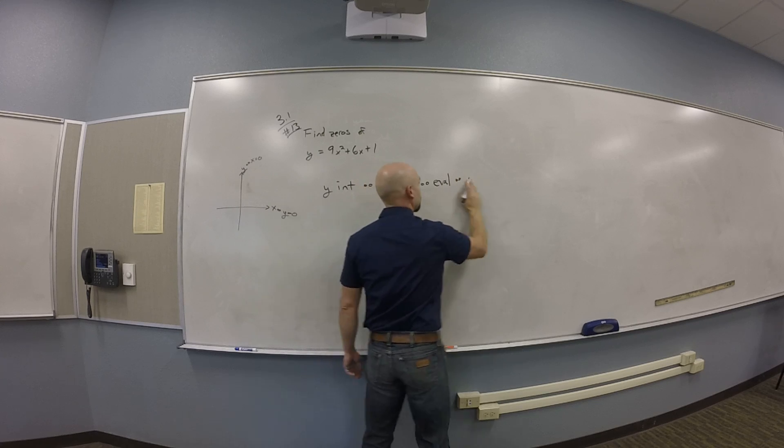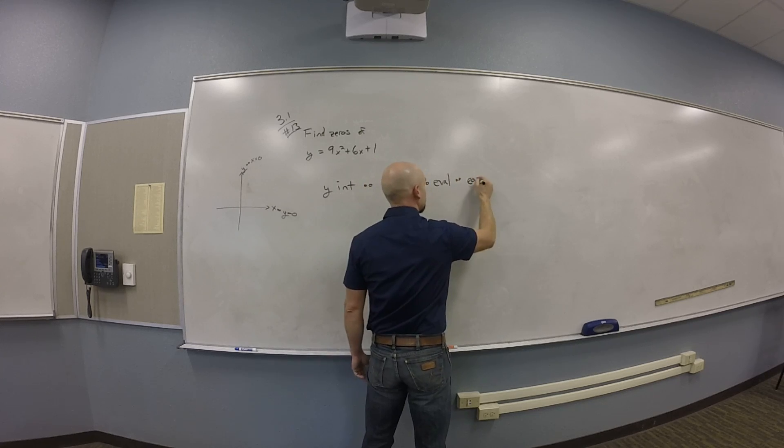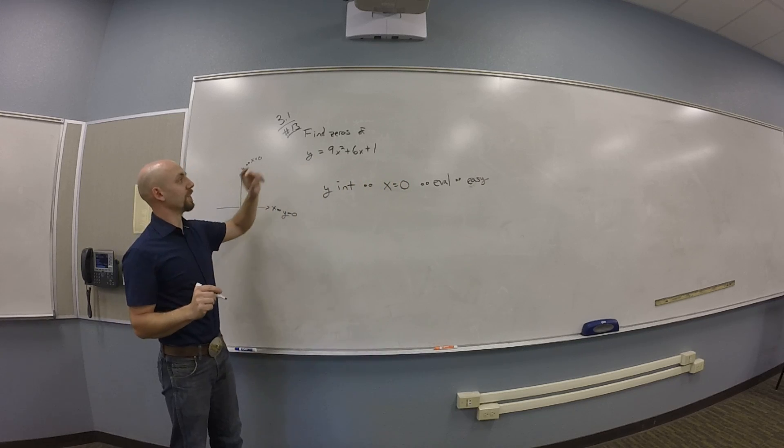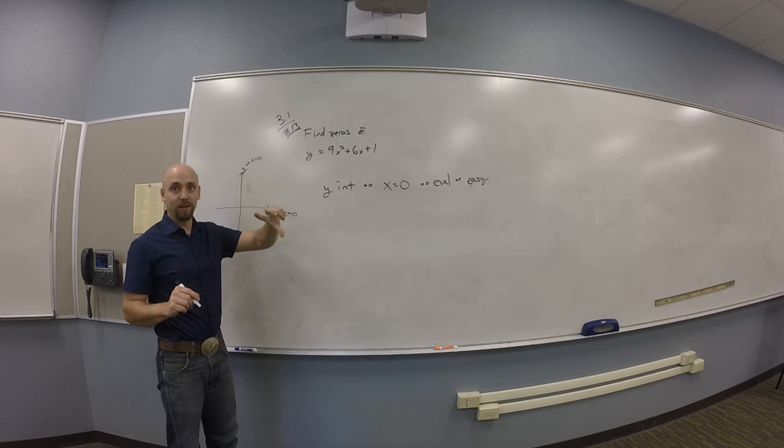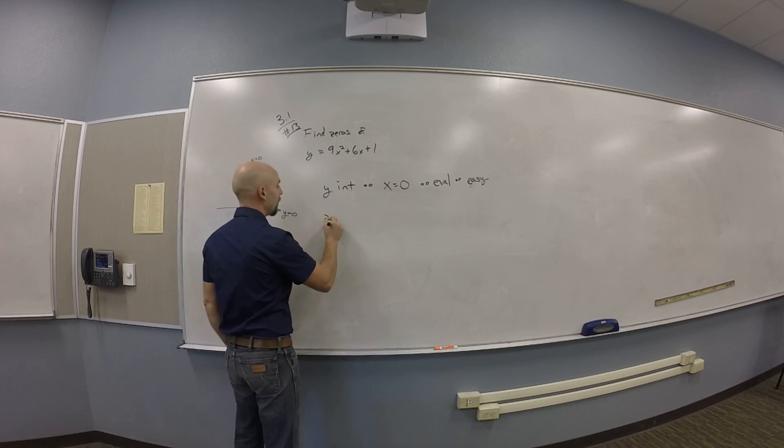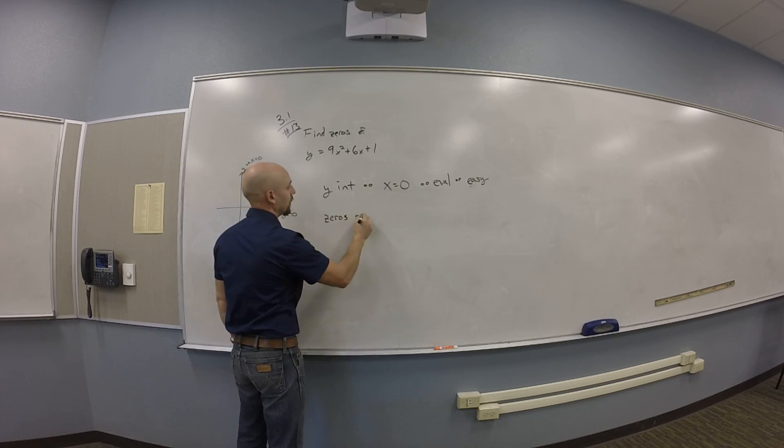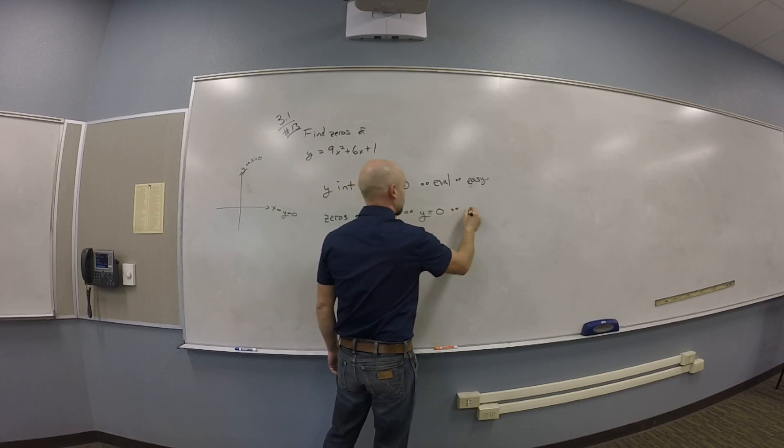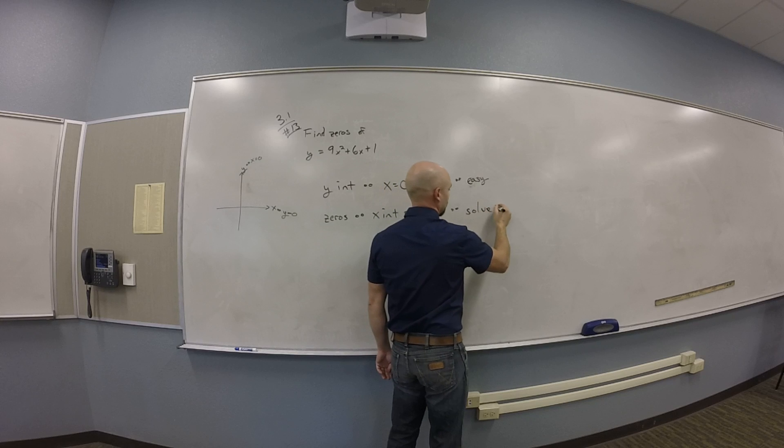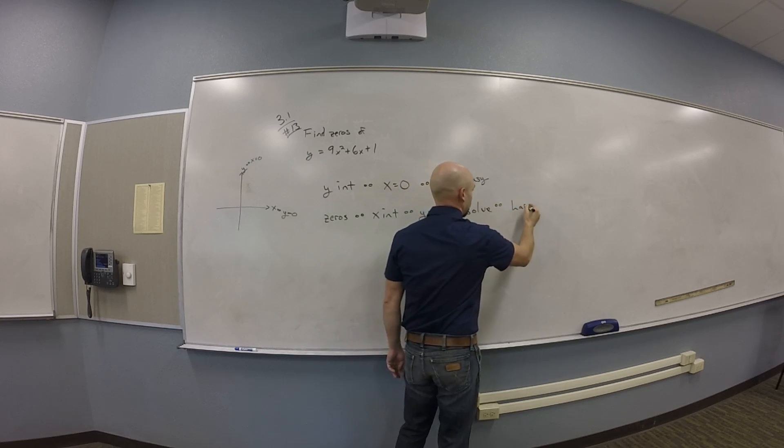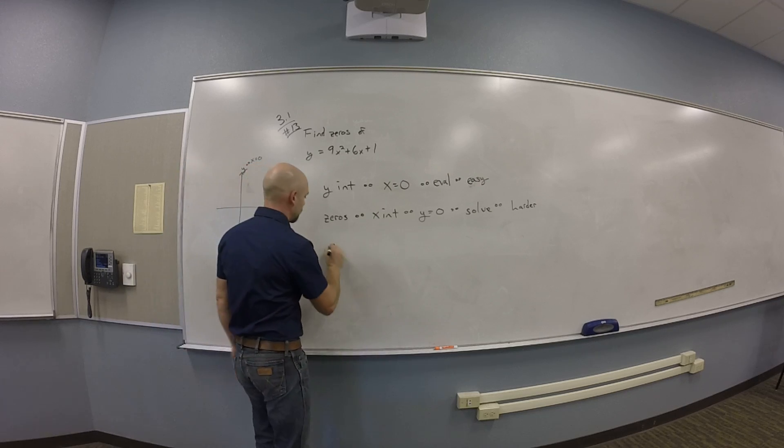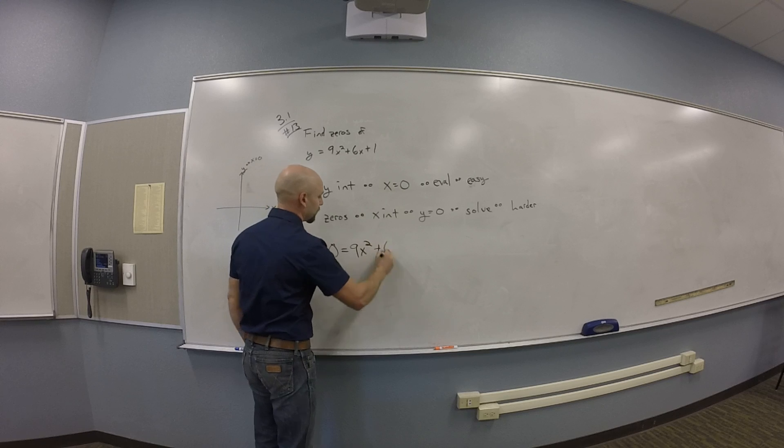So on this, we're asking for the zeros, which are the other one. So we're solving, right? So we're looking for zeros, so we're thinking x-intercepts. So we're thinking y is zero, so we're thinking solve. So we're thinking arc. Very good. Okay, so that was a long-winded way of take zero, set it equal to 9x squared plus 6x plus 1.